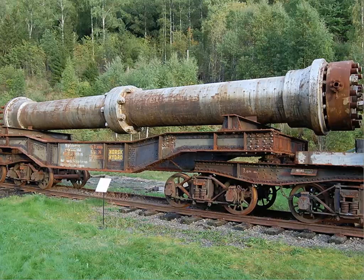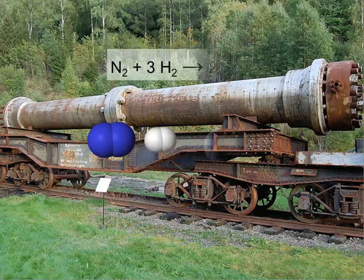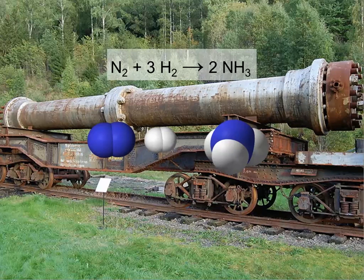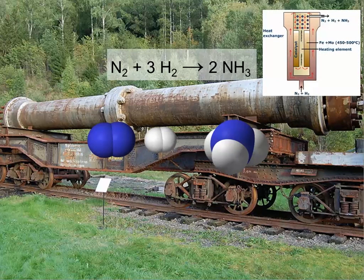Just before the First World War, Fritz Haber succeeded in developing a process where nitrogen and hydrogen gas were brought together at high temperature and, crucially, a catalyst to produce ammonia. A version of this process is still the main way in which nitrogen fertilizer is produced and has boosted agricultural productivity immensely. The reaction is chemically extremely slow, and the catalyst is crucial to make it happen at a useful rate. In the industrial setting, that catalyst is a form of specially treated iron.